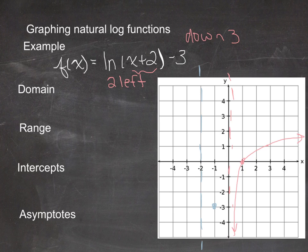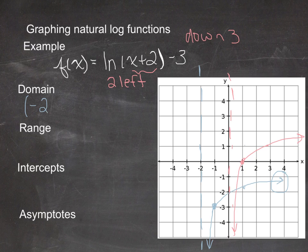There's also another point shifting left 2 and down 3. The transformed graph does have both a y-intercept and an x-intercept, since the graph extends to the right forever and crosses both axes. The domain of the transformed graph is from negative 2 to infinity, because the asymptote moved 2 units to the left. The range is still from negative infinity to positive infinity.